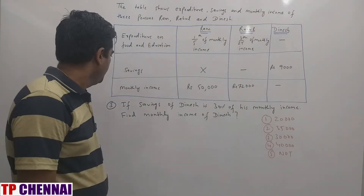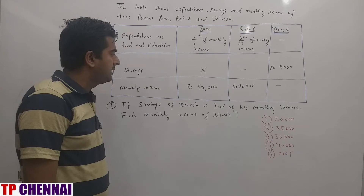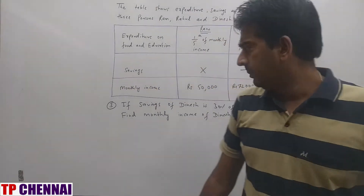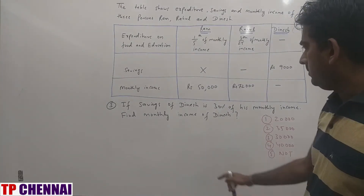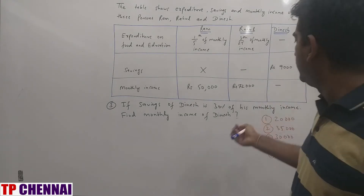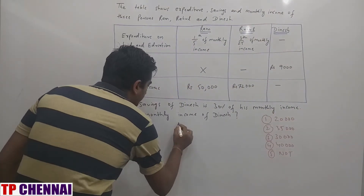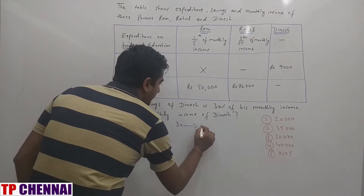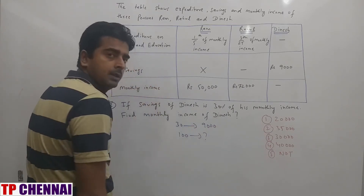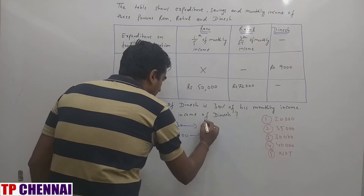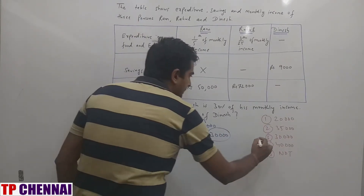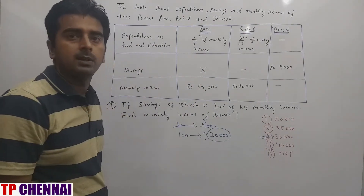Question 3: If savings of Dinesh is 30% of his monthly income, find the monthly income of Dinesh. Savings of Dinesh is 9,000, which represents 30%. So 30 parts = 9,000, meaning 100 parts = 30,000. The answer is 30,000, which is the third option.